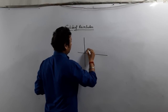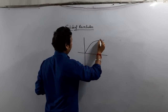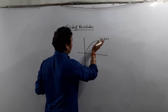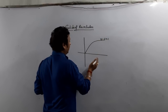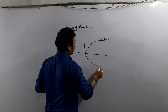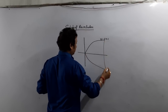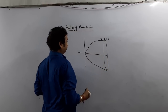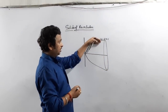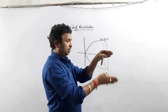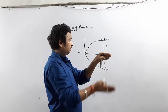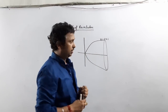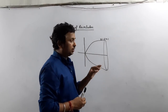Suppose this is the curve. If it is revolved about the x-axis, it forms this type of shape. So this is a solid. When the curve is revolved — revolved means rotating this way — it will form this solid. How do we calculate the volume of this solid? This concept we are going to learn in this video.